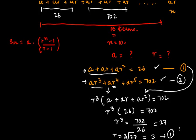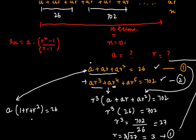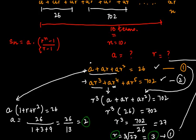If I put this value of r in equation 1, I can write this as a(1 + r + r²) = 26. Or a = 26 ÷ (1 + r + r²). r is 3 plus r² is 9, or 26 ÷ 13 which is 2. So by solving these equations I have got the value of r as 3 and a as 2.